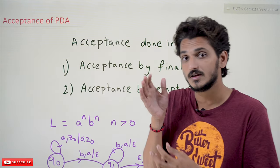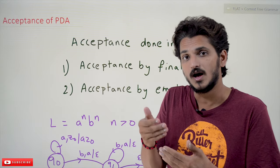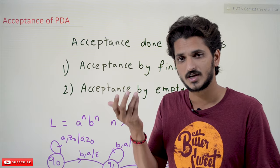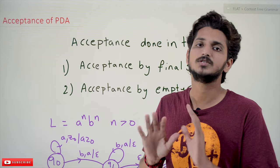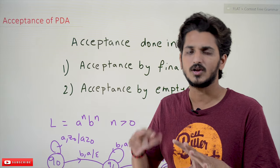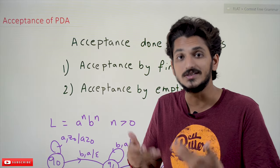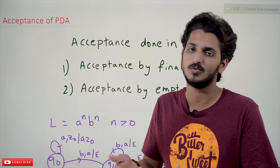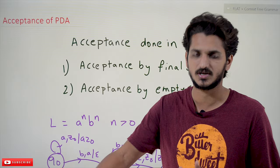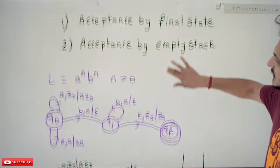From these two methods, we have to start thinking about the logic to construct the pushdown automata — either we move to a final state, or we base it on the empty stack. Any one of the two ways you can choose and think about the logic. Different examples will be discussed in coming classes.